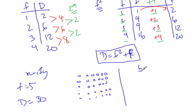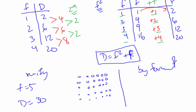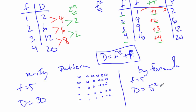Now I have to do it by formula and see if it works — always two ways so you can check if they're the same. I know that f equals five, so d is going to be five squared plus five, which is 25 plus five, which is indeed 30. And so we were able to find the pattern and verify it.